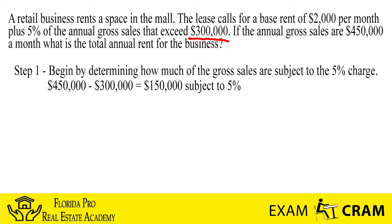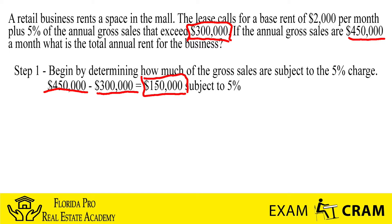We want to begin by determining how much of the gross sales are subject to the 5% charge. We know that $300,000 is the threshold — anything over that amount, they're going to want 5%. If you make $299,000 in gross sales, they're not going to worry about that. In this case, the business had a good year and made $450,000. So we take $450,000 minus $300,000, which means this business is subject to $150,000 in additional rent. That additional rent is going to be at 5%, so we take that $150,000 and multiply it by 5%.